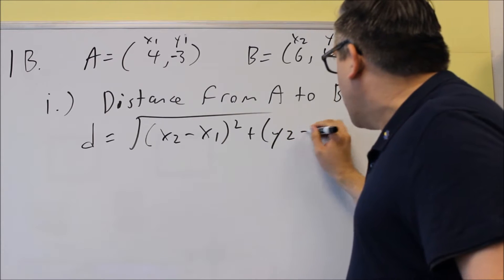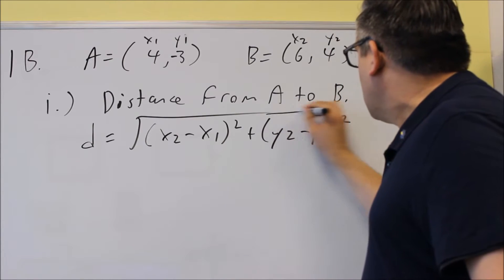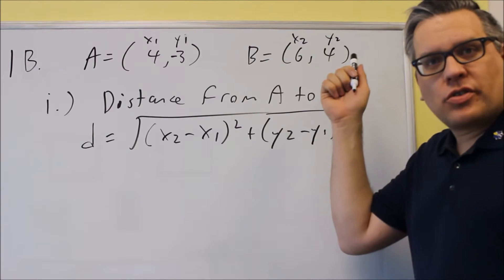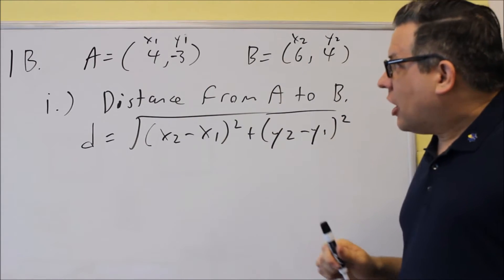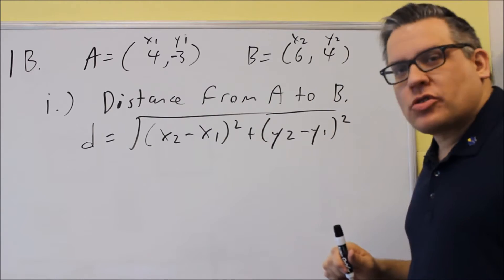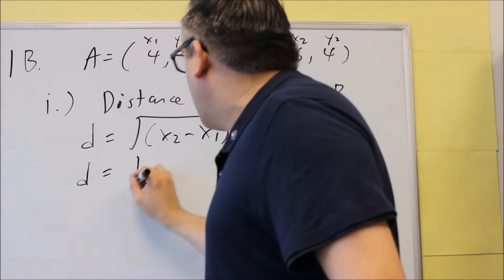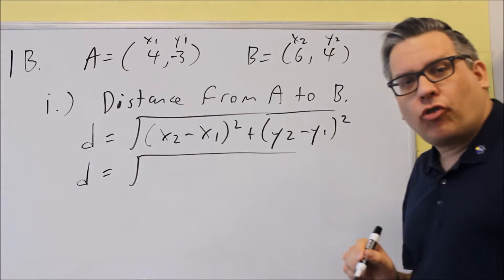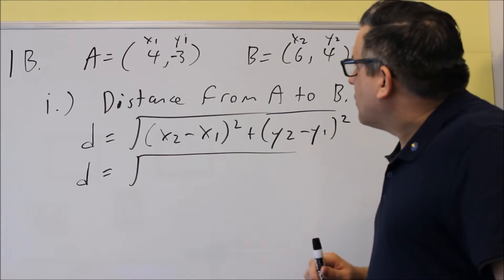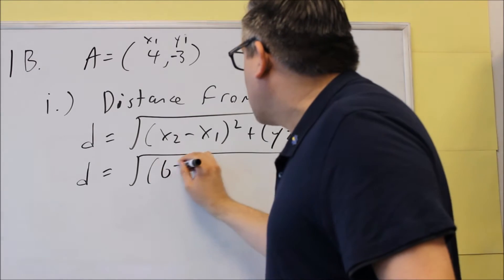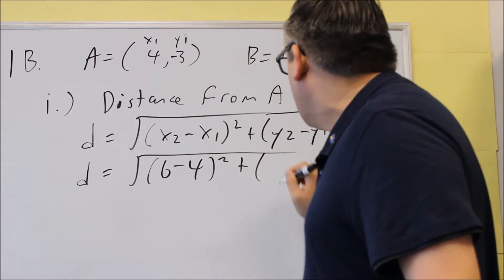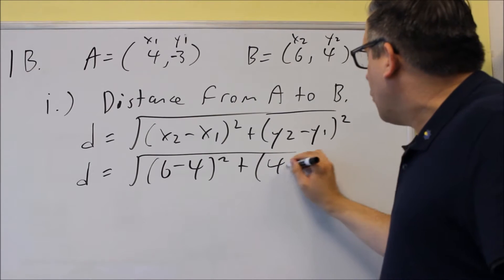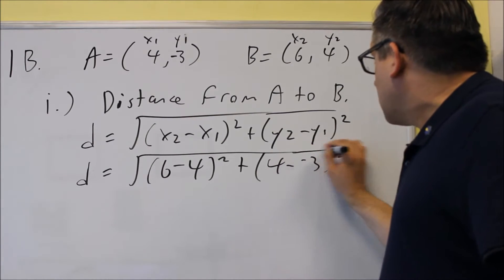So we're going to put that one down first. And then we already have these points labeled like we had before, we just have some different numbers now. So now we're going to put these new numbers into the formula. x2 minus x1, we're going to do 6 minus 4 squared. And difference in the y's, 4 minus negative 3 squared.